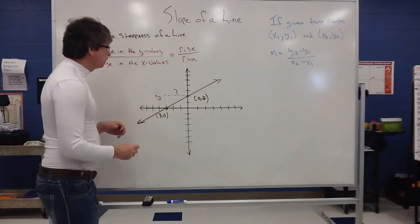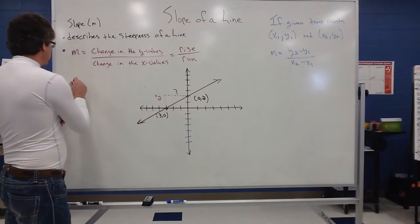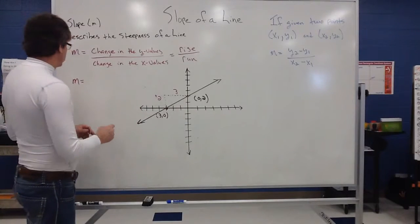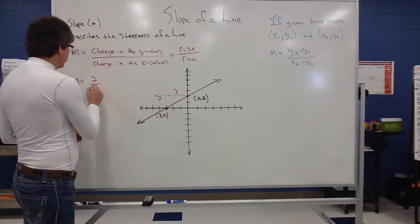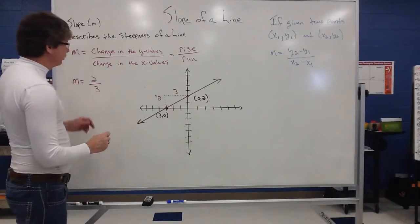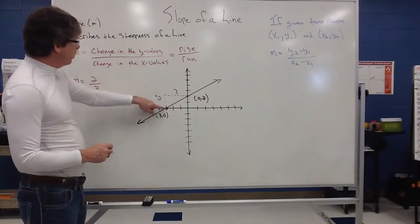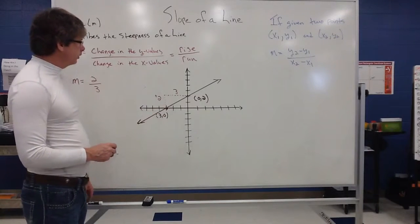So, what I can do is write that as a fraction or ratio. The ratio of these two numbers describes our slope. So, it rose up two and it ran over three. So, our slope is two-thirds. So, it's the change in those y values over the change in the x values.